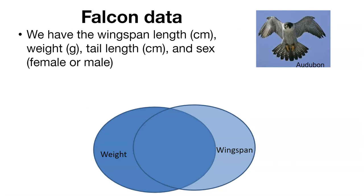For example, let's take a look at a data set on falcons — peregrine falcons. We know we have the wingspan length measured in centimeters, the weight of the falcon in grams, the tail length in centimeters, and the sex, whether it's male or female. We might be interested in knowing how these variables are all related to one another.